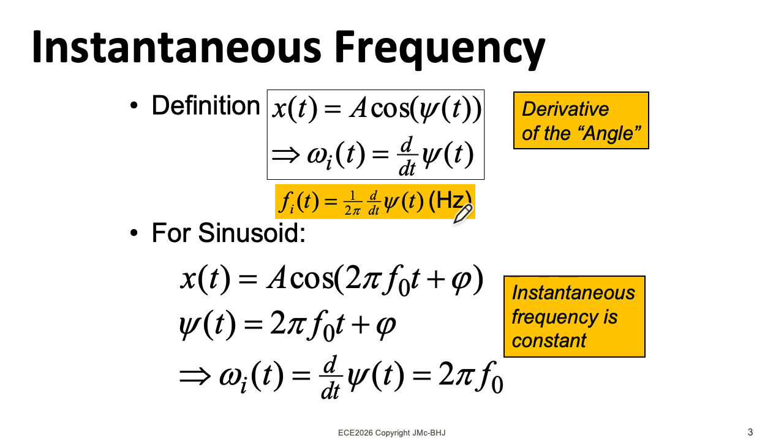If you want it in hertz, you need to divide by 2 pi. Now, as a sanity check, let's see what is the instantaneous frequency of a constant frequency sinusoid. Well, it's easy enough to take the derivative of this function here. It's just 2 pi f naught. The phase goes away.